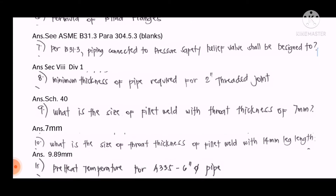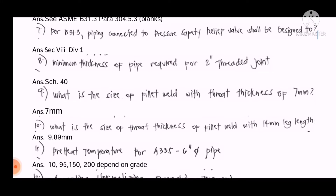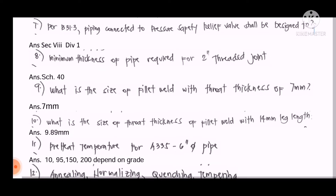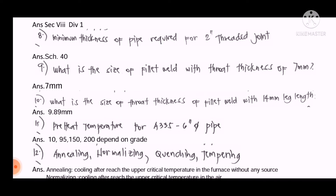Question number nine: What is the size of a fillet weld with a throat thickness of 7 mm? The answer is 7 mm. Question number ten: What is the throat thickness of a fillet weld with a 14 mm leg length? The answer is 9.89 mm.